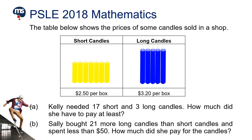Part A: Kelly needed 17 short and 3 long candles. How much did she have to pay at least? Part B: Sally bought 21 more long candles than short candles and spent less than $50. How much did she pay for the candles?